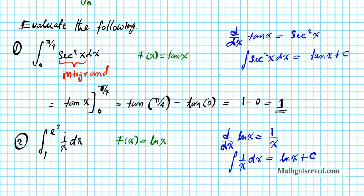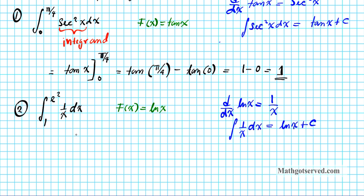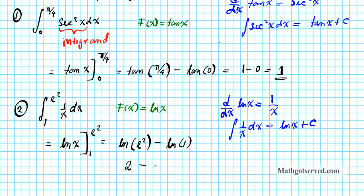We're going to evaluate this function at the upper limit minus the function evaluated at the lower limit using FTC part 2. This becomes the natural logarithm of x evaluated from 1 to e squared. We substitute the upper limit: we have the natural logarithm of e squared minus ln of 1. Using the properties of logarithms, ln(e²) simplifies to 2, and the natural logarithm of 1 is equal to 0. So 2 minus 0 equals 2. That's the antiderivative of 1 over x from 1 to e squared.